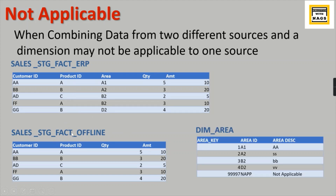In this case, you union the two tables together. Once you build the same fact for both tables and union these records, you add one more record in the area dimension flagged as NAPP — not applicable. Then you do the lookup between area. Once you union the two tables and apply NAPP, you do the lookup and get the respective surrogate keys in your fact table. This is how you handle the data and model your dimensions and fact with proper mapping.